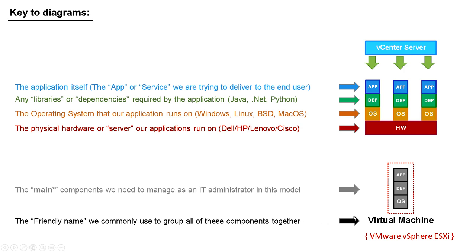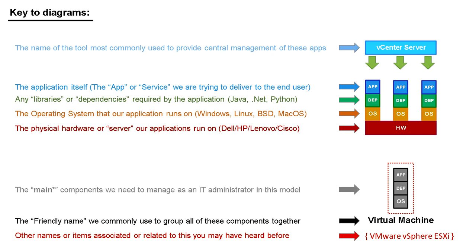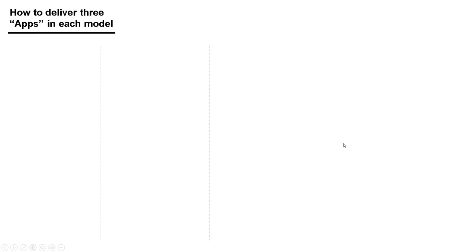When we manage those things together, we call it a VM or virtual machine — that's the friendly name for it. Up here, once we've done that diagram, we show the name of the tool most commonly used to manage it, which is vCenter Server. And in red text in brackets, we give you any other names or items associated with it that you might have heard before, just to give you some context on where they fit in.